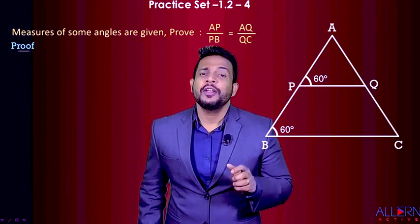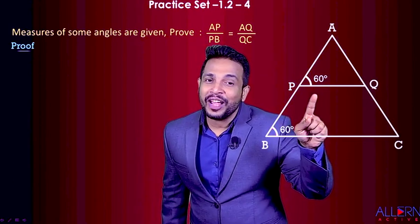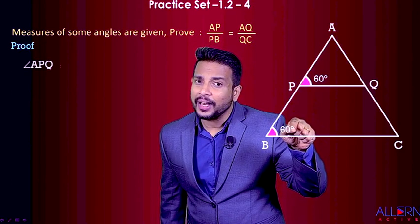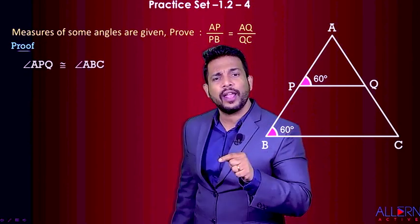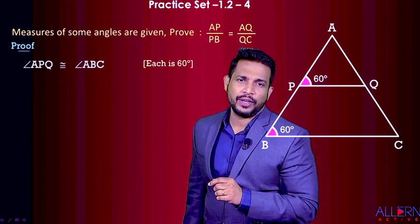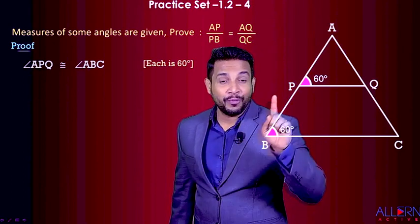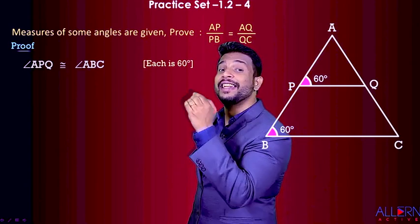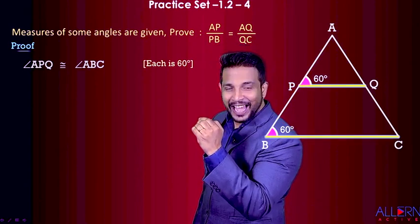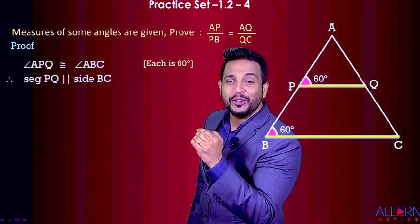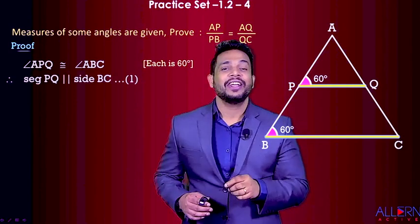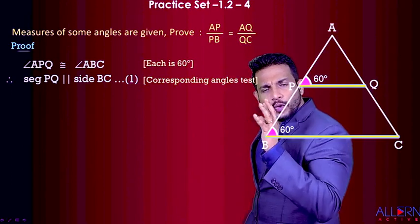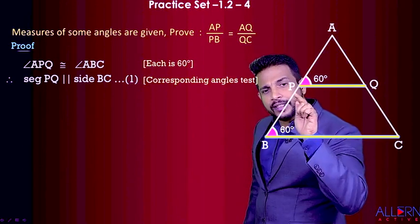To get the lines parallel, look at the information we have. We have angle APQ and angle ABC — can we say they are congruent? Yes, they are congruent because each is of the same measure, that is 60°. They are a pair of corresponding angles, and if corresponding angles are congruent, the lines are parallel. So we can say PQ is parallel to BC. The reason is corresponding angles are equal. That's result number one.